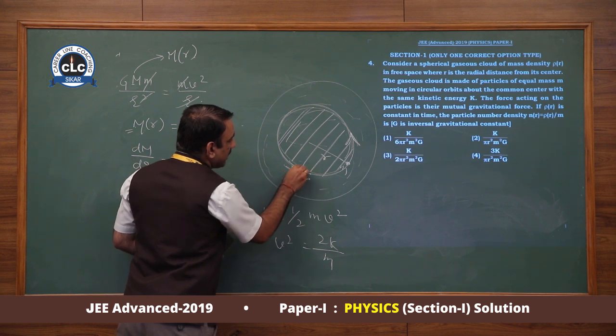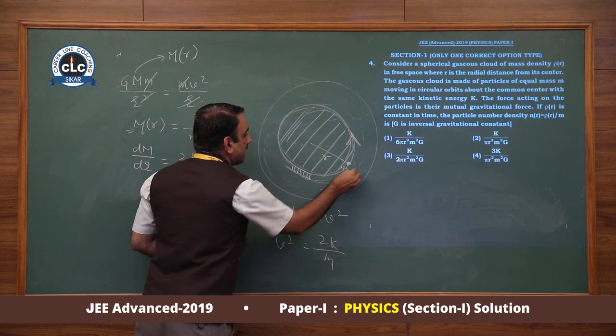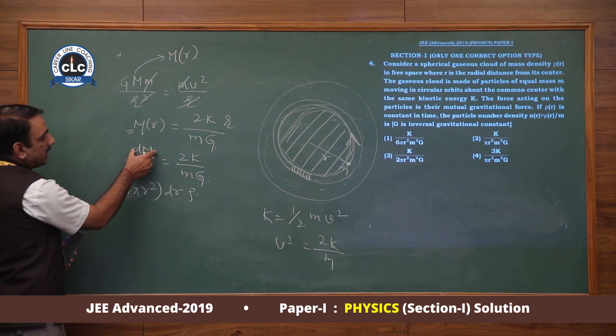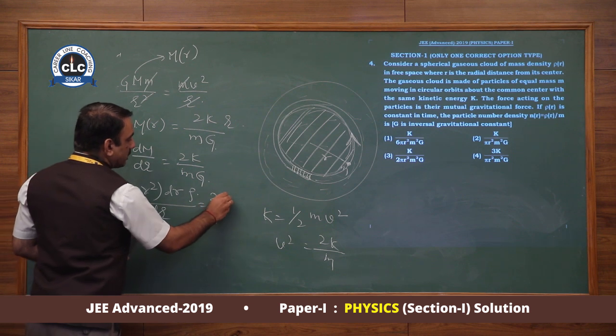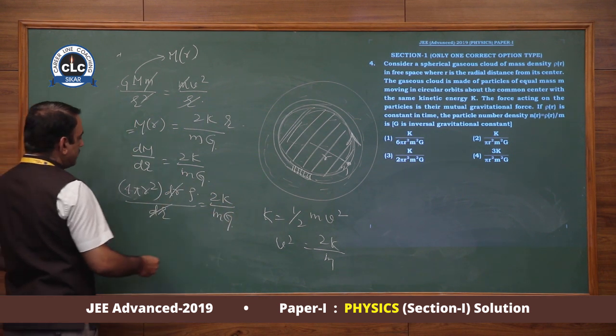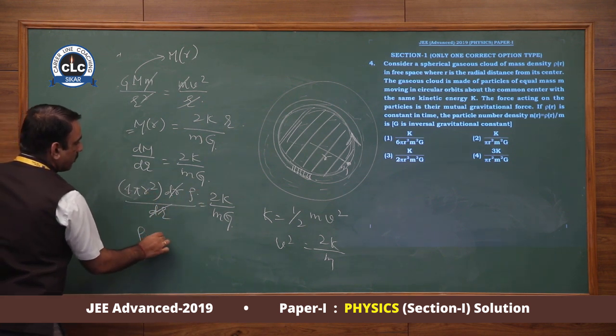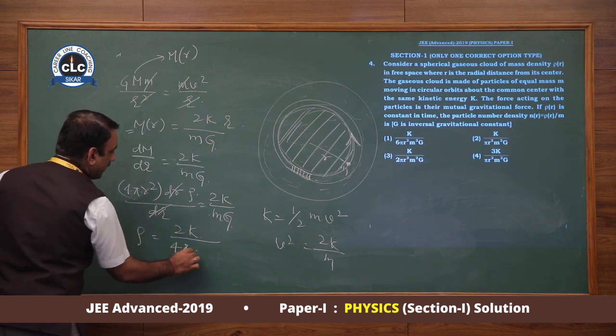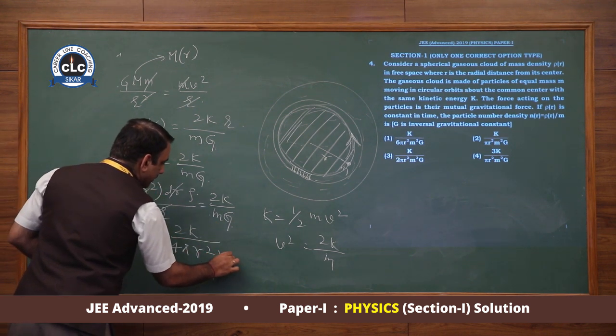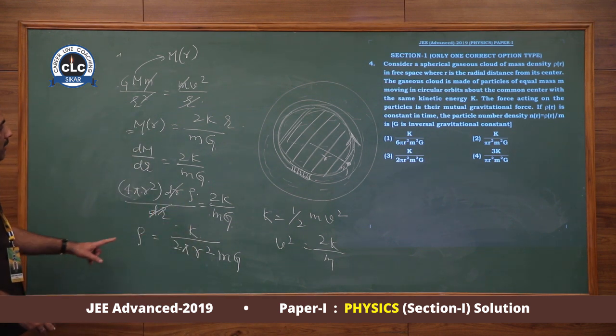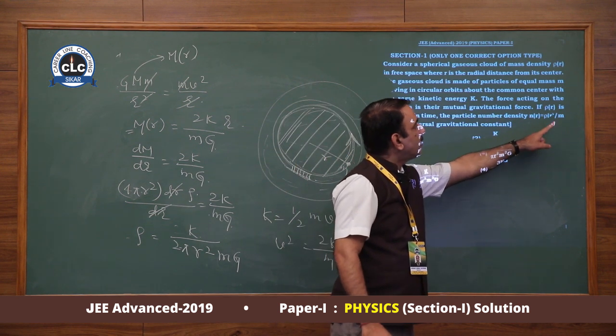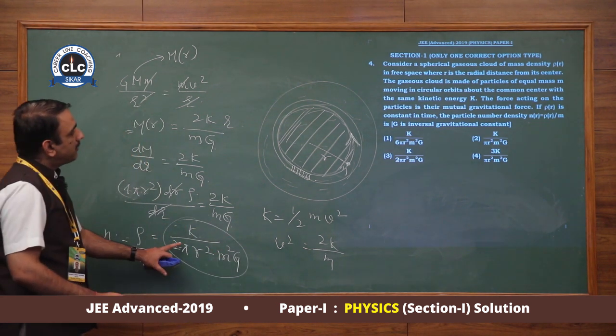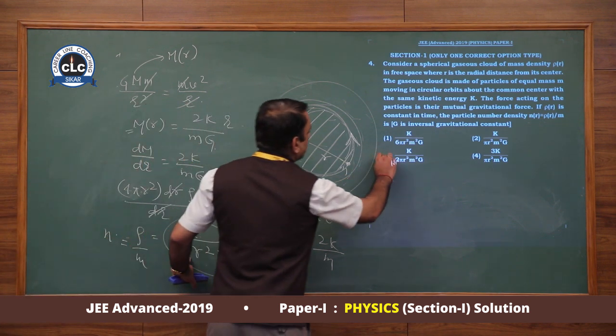The centripetal force is mg(r) where g is calculated as a function of r. Since mass changes with radius, we differentiate: dm/dr = 2k/(mg). For a thin shell of width dr and area 4πr², we have dm = 4πr²ρdr. So dm/dr = 4πr²ρ = 2k/(mg). Solving for ρ: ρ = 2k/(4πr²mg) = k/(2πr²mg). The number density is n(r) = ρ/m = k/(2πr²m²g). This is our answer. The third option is correct.